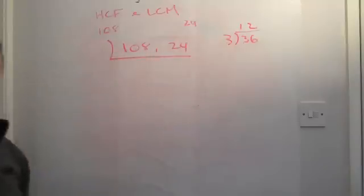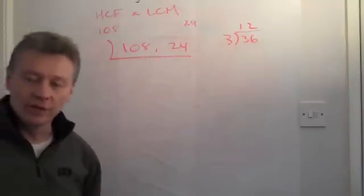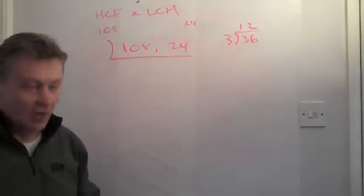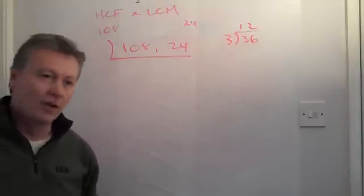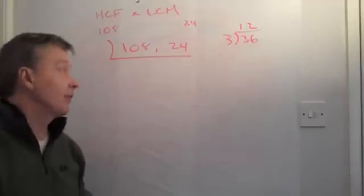Now, if I look at both of those numbers, I want to find a number that will divide into both of them. And perhaps the easiest numbers to start off with are something like 2, 3, 5, 7, something like that.